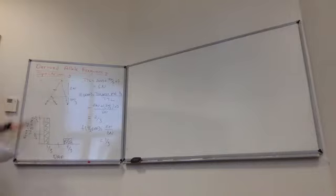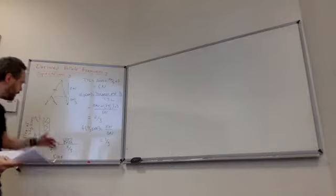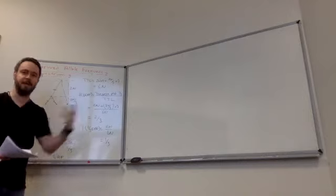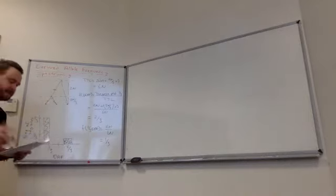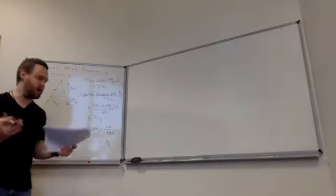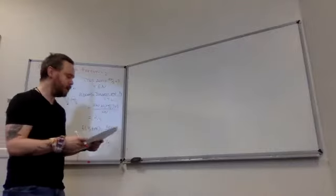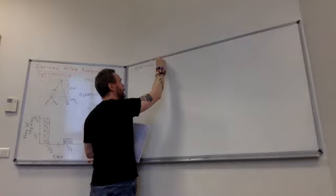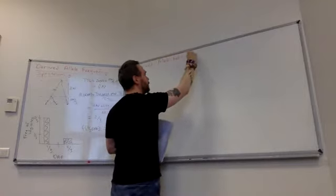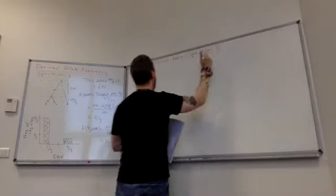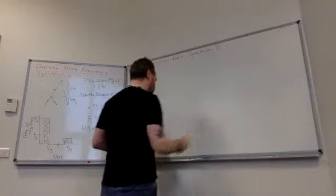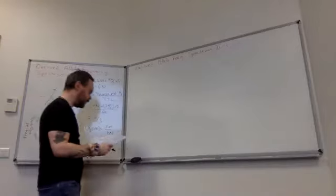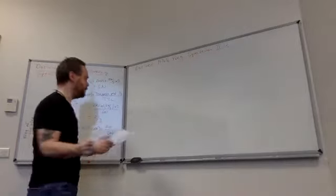So we expect one-third of our segregating sites to have a derived allele frequency of two-thirds. This very simply demonstrates how we can use our knowledge of coalescent theory to come up with an expectation for what the site frequency spectrum would look like for this example. Now let's complicate things and work with the derived allele frequency spectrum for four gene copies.